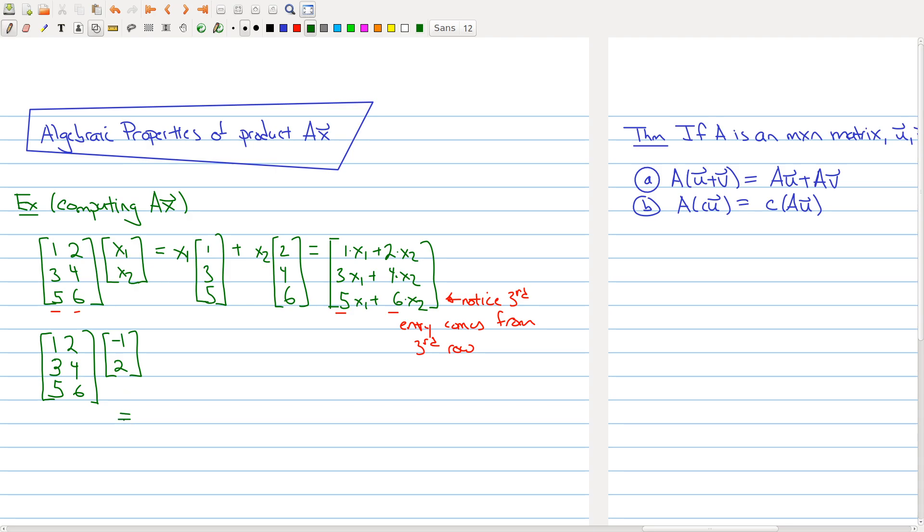So for example, if I wanted to compute what this is, I could go, well, this should be 1 times minus 1 plus 2 times 2. Then I have 3 times minus 1 plus 4 times 2. Then I have 5 times minus 1 plus 6 times 2. Now, as you get better at this, you can just do these calculations in your head. And that's normally what I do. I would go, oh, 1 times minus 1 is negative 1 plus 2 times 2 is 4. So that should be 3 and so on. So this should be a 3, and this should be a 7.